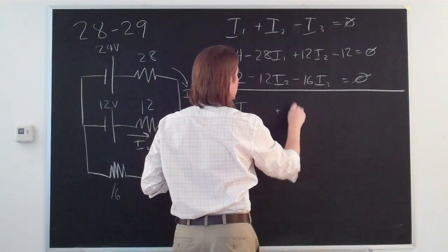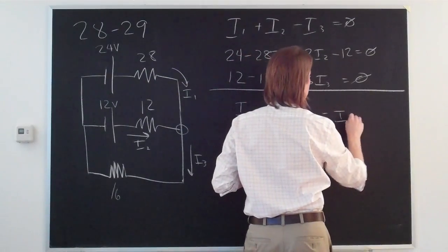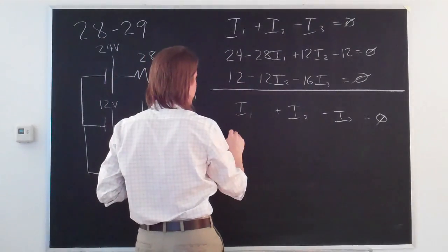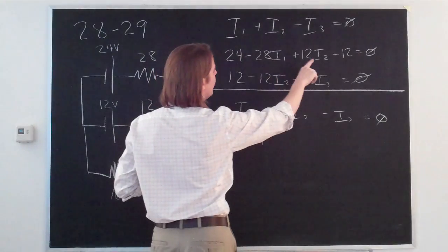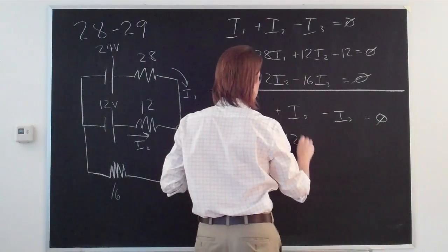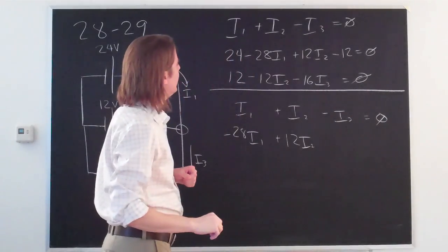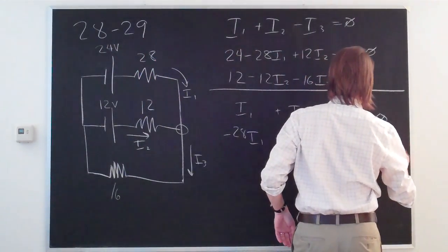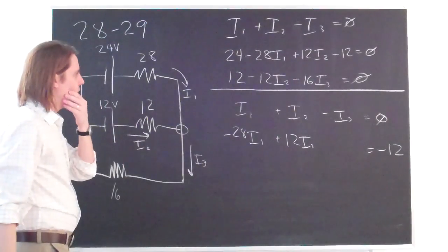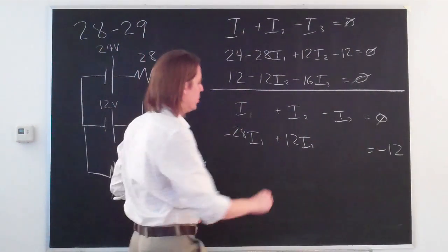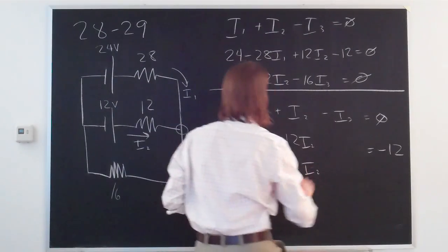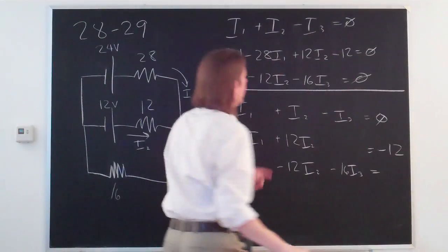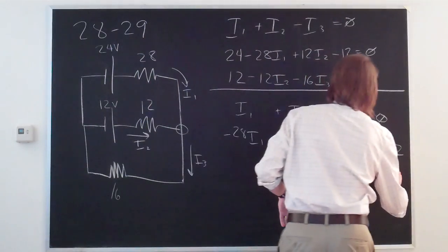So this one we just write I1 plus I2 minus I3 equals zero. This one is minus 28I1 plus 12I2 and then no I3. And then the constants make 12 but they go to the other side to make minus 12. And then this one has no I1 but it's minus 12I2 and it's minus 16I3. And then it's 12 here which goes to the other side to make minus 12.